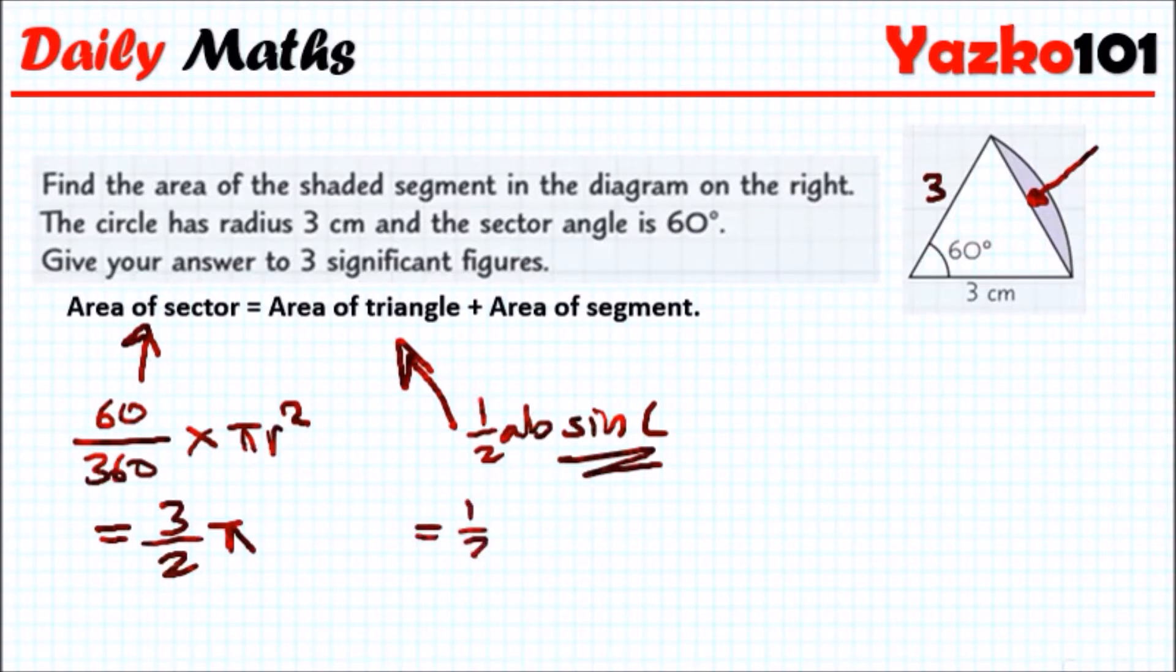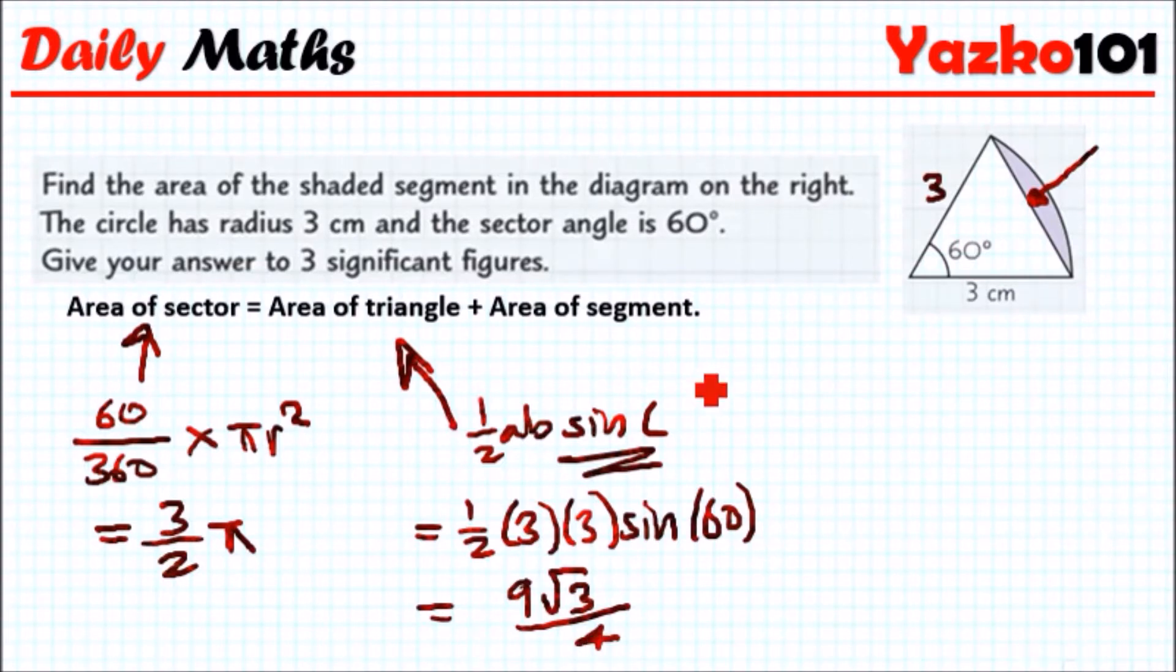That means we have 1/2 × 3 × 3 × sin(60°). Plugging this into your calculator, you should get 9√3/4. Now, how to get the area of the segment?